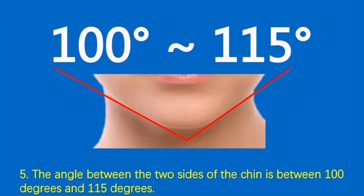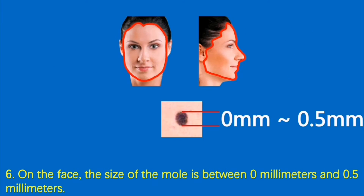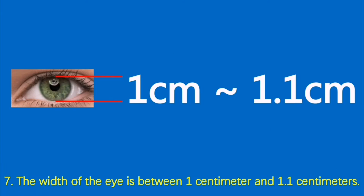Condition 5: The angle between the two sides of the chin is between 100 degrees and 115 degrees. Condition 6: On the face, the size of any mole is between 0 millimeters and 0.5 millimeters. Condition 7: The width of the eye is between 1 centimeter and 1.1 centimeters.